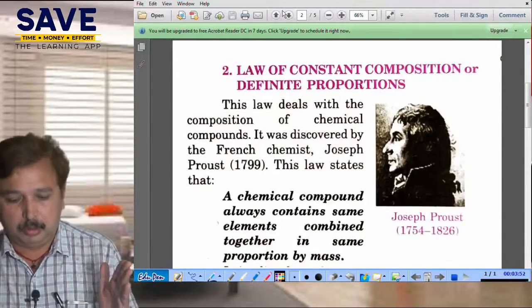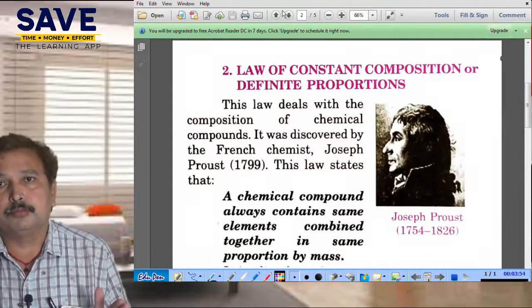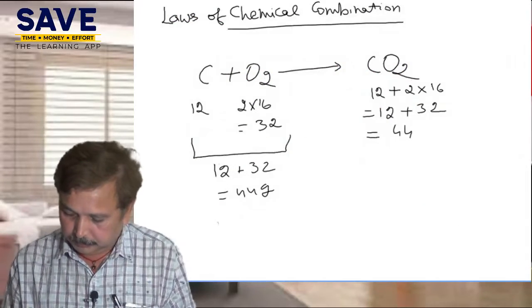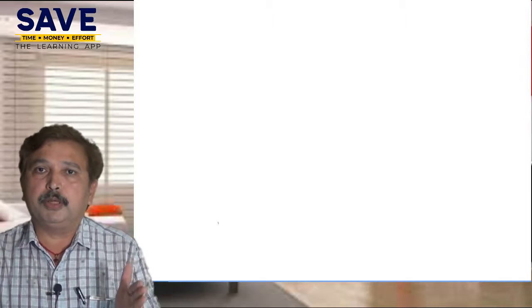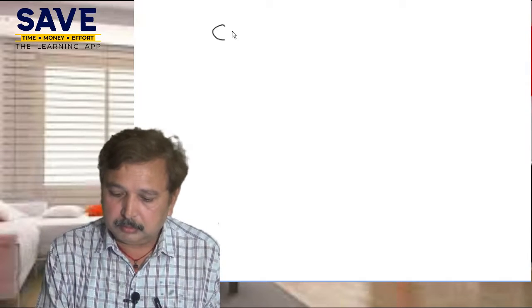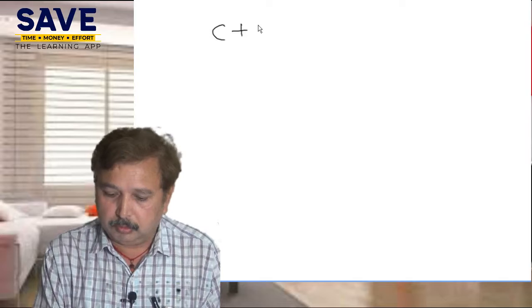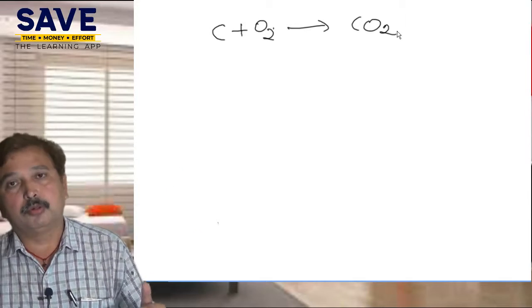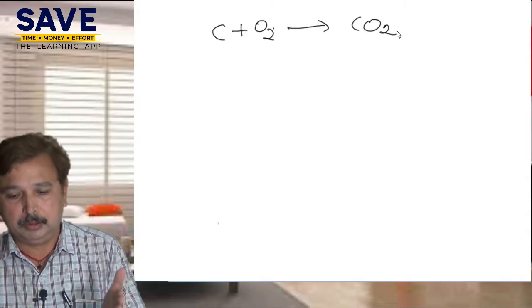The second law is the Law of Constant Composition, or Law of Definite Proportion. Whatever may be the source of preparation of a compound — for example, suppose we prepare carbon dioxide by burning carbon in oxygen: C plus O2 arrow CO2.